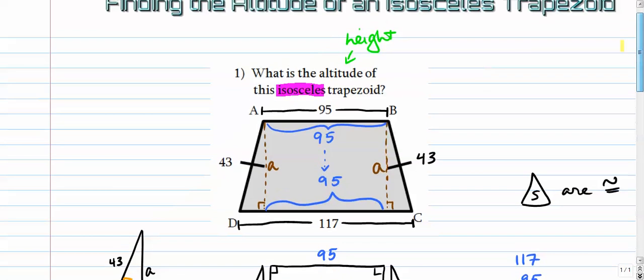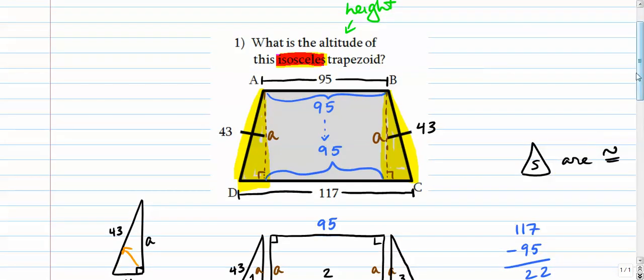And it all really kind of hinges on this idea of isosceles, right? The fact that the left leg and the right leg are the same. And that kind of like sets off some nice congruencies in the picture. These triangles that sort of flank the rectangle left and right triangles are congruent, which kind of helped us with all the other stuff.